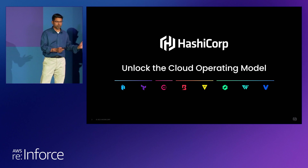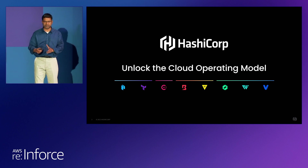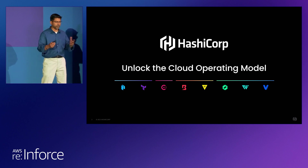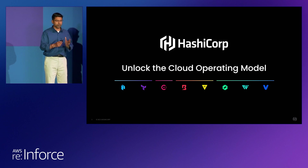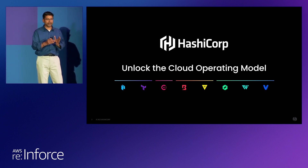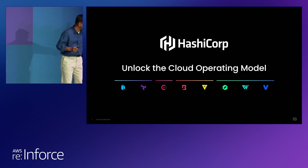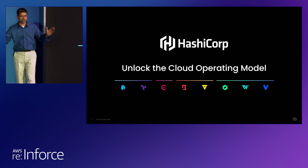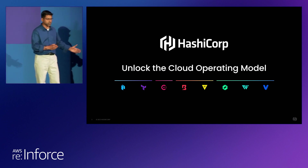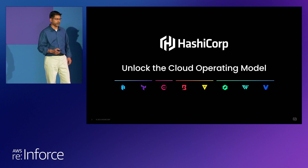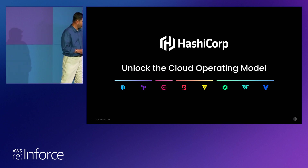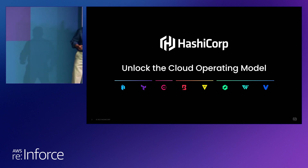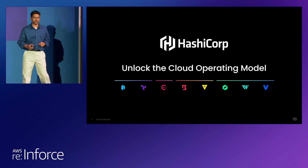Just a brief intro about HashiCorp. HashiCorp makes tools to automate infrastructure — automating at every stage of the infrastructure: deploy, connect, secure, and run. All four stages, and we have a suite of tools. We internally call it HashiStack. Today I'm going to talk about Vault, the yellow color, and specifically secrets management.